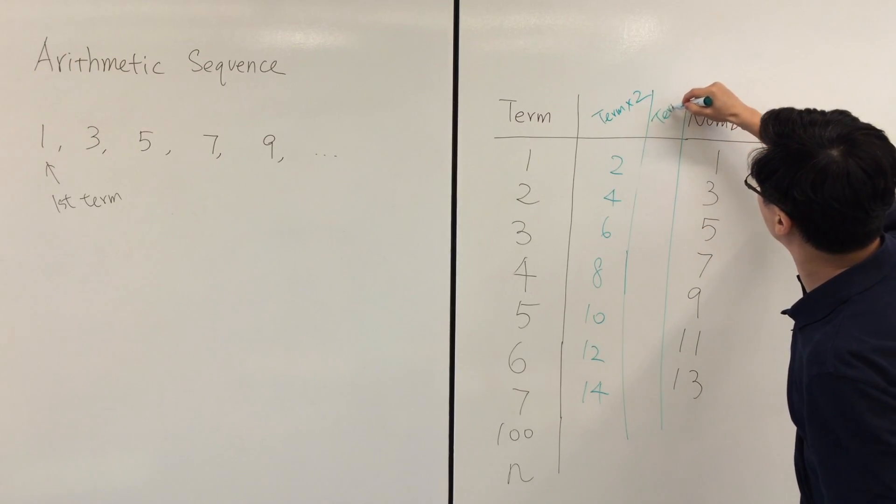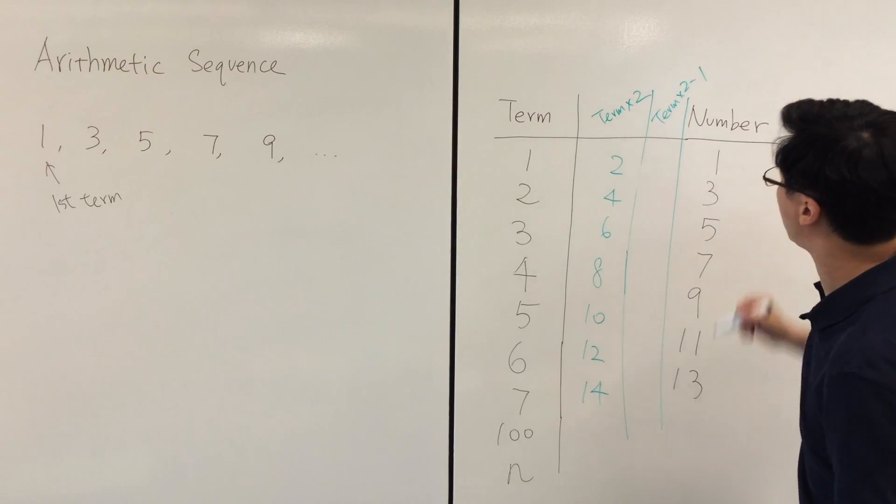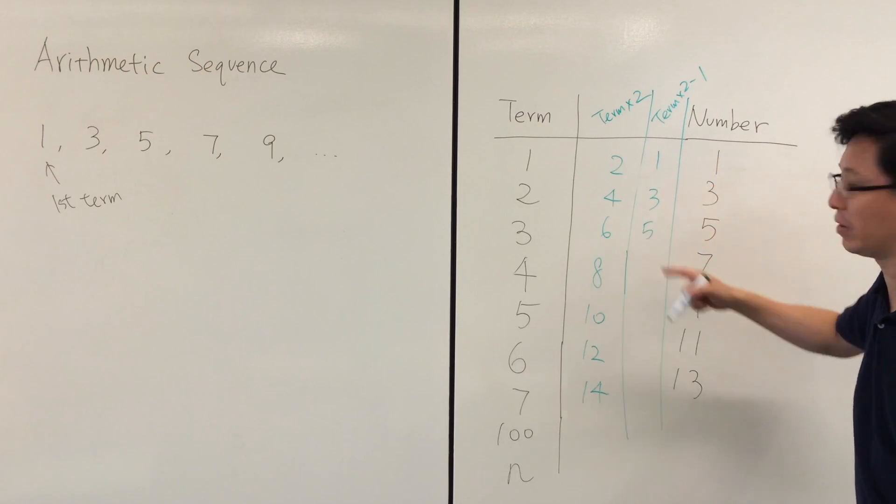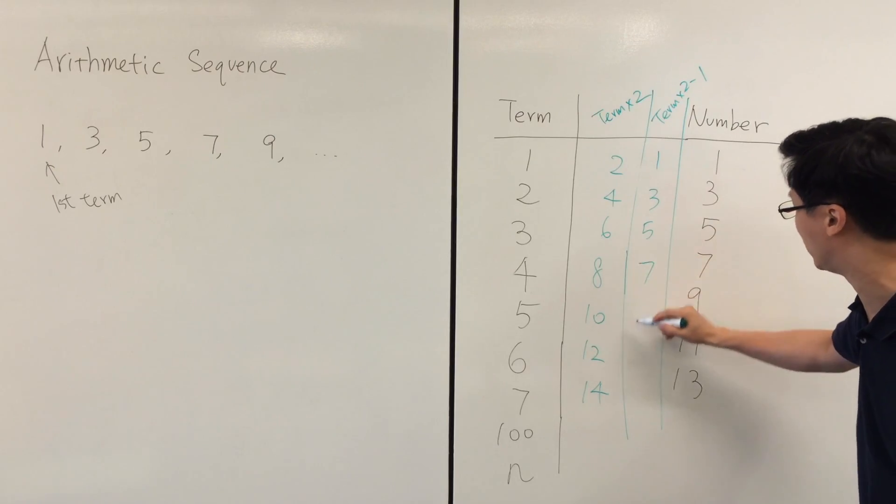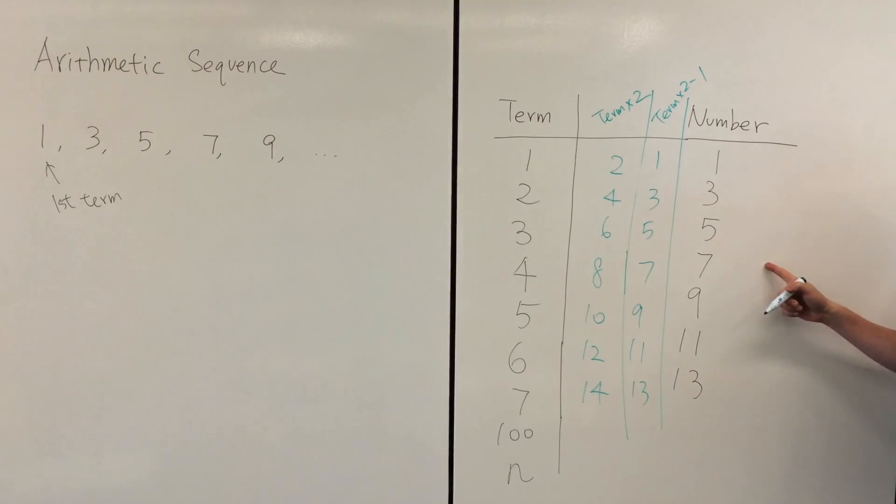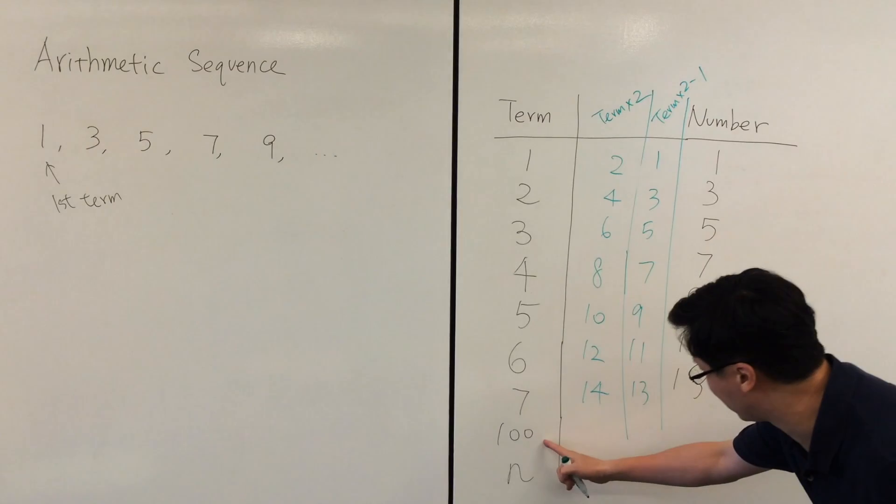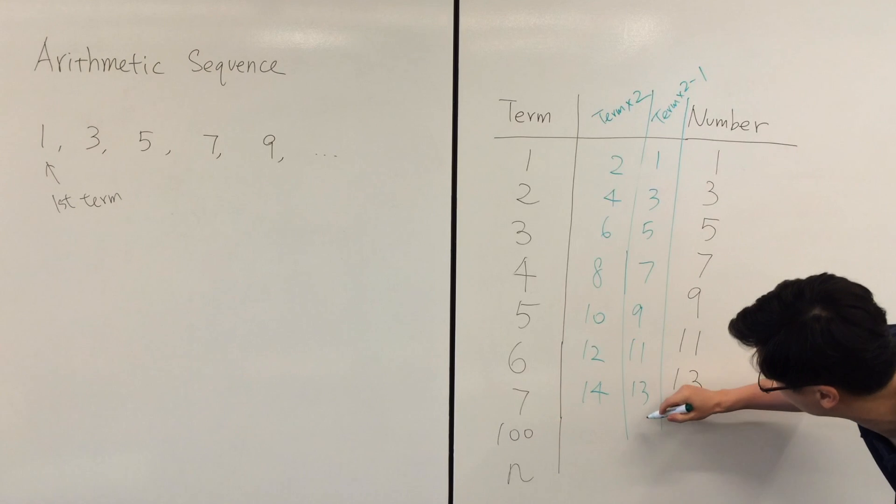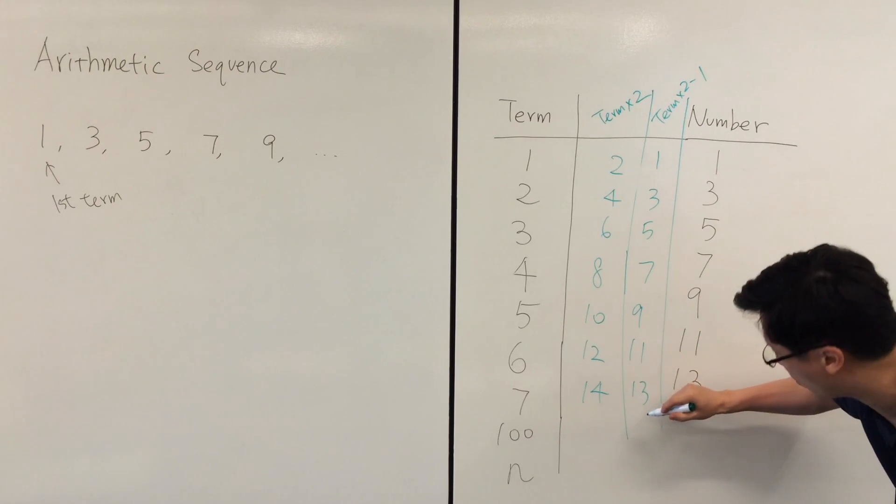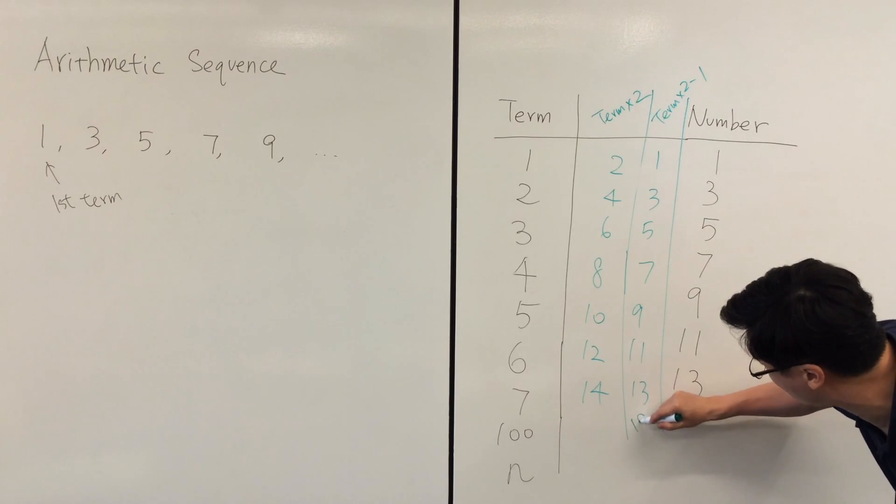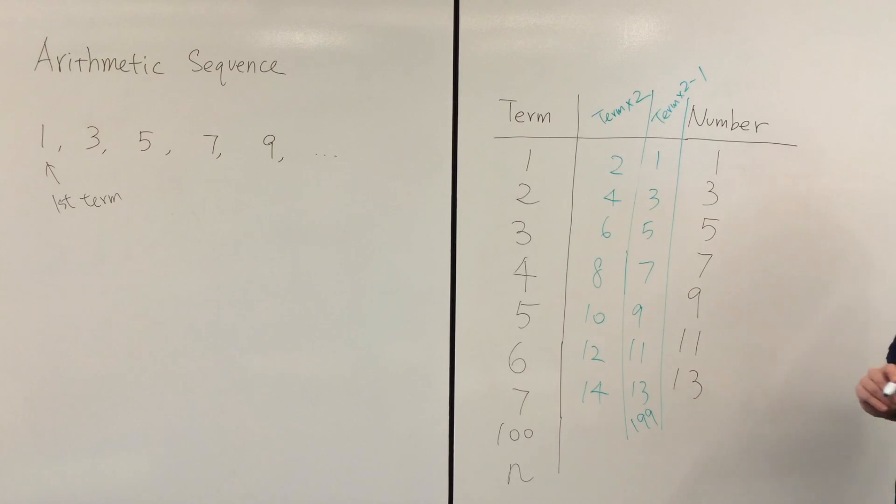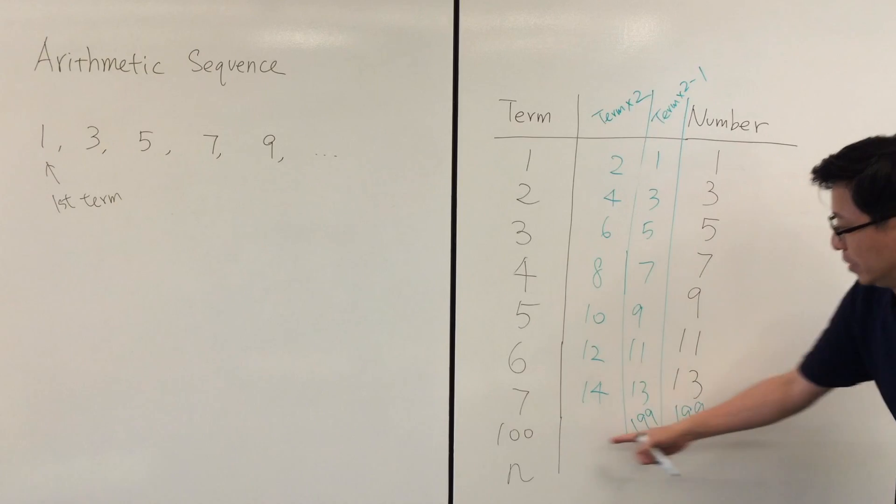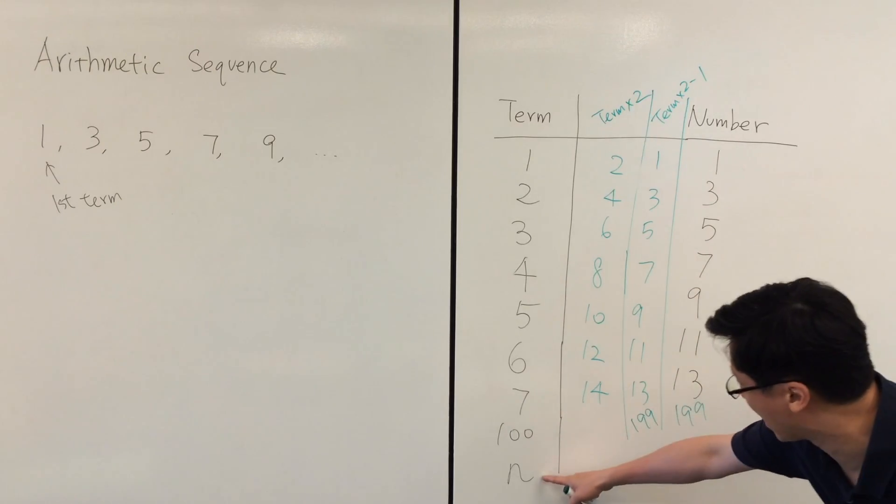So this will be 10 times 2 minus 1, 1. 6 minus 1 is 5, 8 minus 1 is 7. So if this is 100, then we multiply this 100 by 2 and then subtract 1. This will be 199. That is the 100th number should be 199.